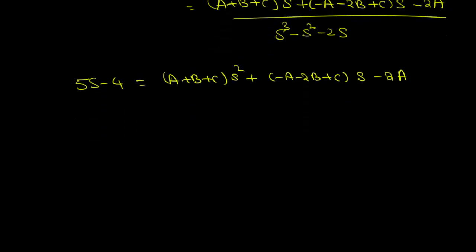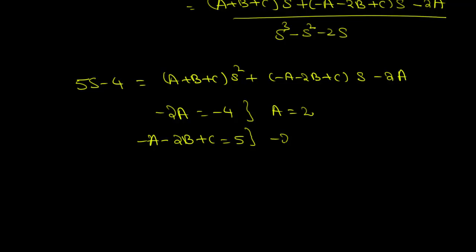Comparing coefficients: the constant term gives minus 2A equals minus 4, which implies A equals 2. The coefficient of s gives minus A minus 2B plus C equals 5, which implies minus 2B plus C equals 7, after substituting A equals 2.